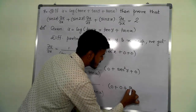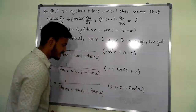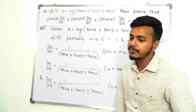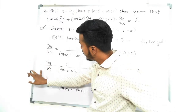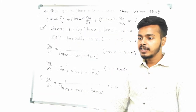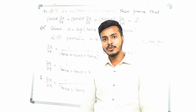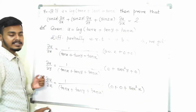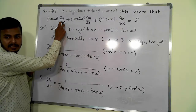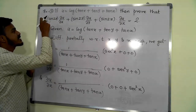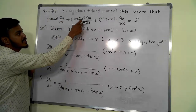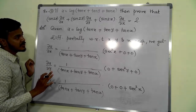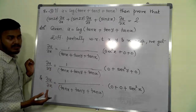So I have found out del u by del x, del u by del y, and del u by del z. Now going back to the question, I need to multiply del u by del x by sin 2x.